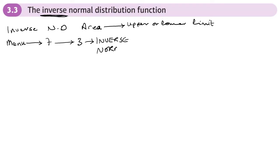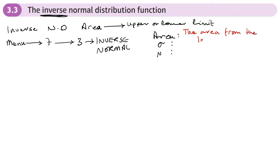So press 3 and that will take you to inverse normal. What you'll see is that the options are area, standard deviation, and mean — those are the three values it wants. It's really important that the ClassWiz calculator, the FX991EX, is expecting an area from the left. When you type your area in, it needs to be the area from the left tail.